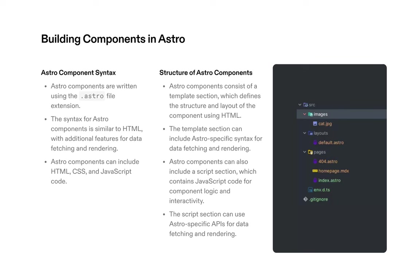Astro components are written with the .astro file extension, which you can install support for in VS Code and other text editors. The syntax is similar to HTML, and Astro components include HTML, CSS, and JavaScript. The structure consists of a template section with Astro-specific syntax and a rendering script section that contains JavaScript code for component logic and interactivity.